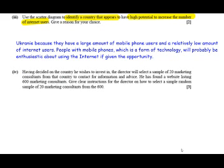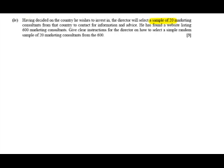Having decided on the country, the director will select a sample of 20 marketing consultants to contact for information and advice. He's found a website listing 600 marketing consultants. We need to give clear instructions on how to select a simple random sample of 20 from 600. We need to go through all the steps carefully, addressing any nuances without leaving out important parts of the process.